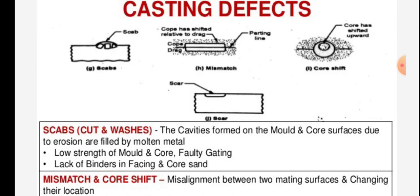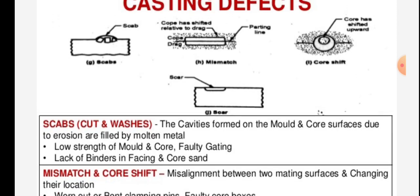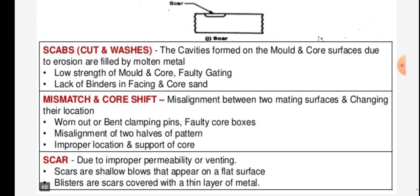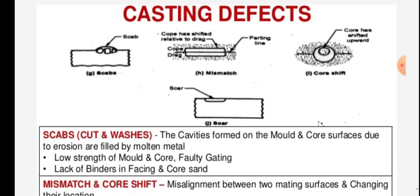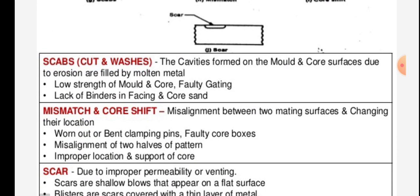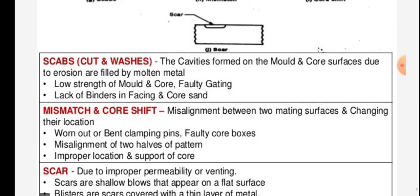The next group of casting defects includes scabs, cut and washes, mismatch, cover shift, and scar. Scabs and cut and washes occur when cavities formed on the mold and core surfaces due to erosion are filled by molten metal. Causes include low strength of mold and core, poor gating, and lack of binders in the facing and core sand.